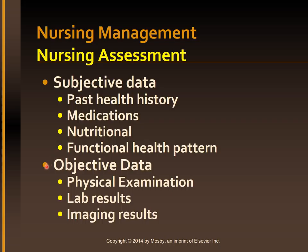Objective data includes physical examination for fever, cachexia, and wasting of extremities. The integumentary system is assessed for icteric sclera, jaundice, petechiae, ecchymosis, spider angiomas, palmar erythema, alopecia, loss of axillary and pubic hair, and peripheral edema.